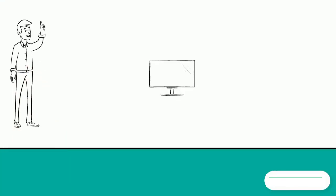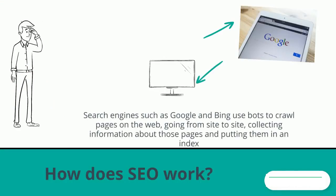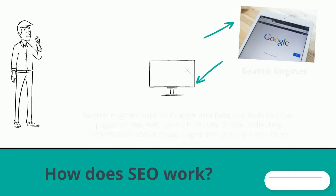Search engines such as Google and Bing use bots to crawl pages on the web, going from site to site, collecting information about those pages and putting them in an index.